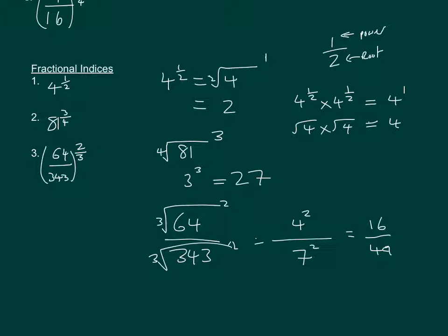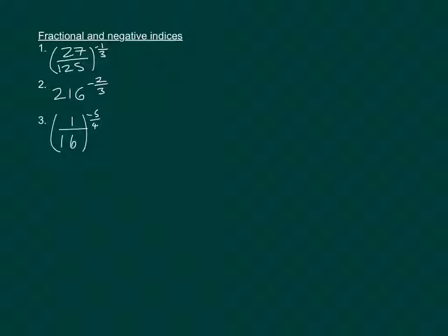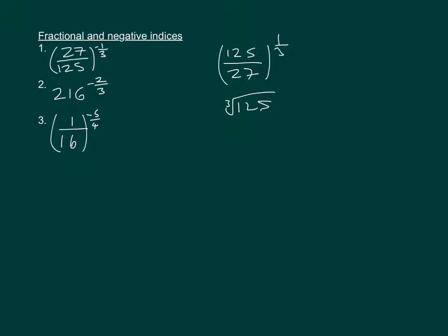Now let's look at questions where there's a combination of the two: fractional and negative indices. For number one, we have 27 over 125 to the power of minus a third. That minus is telling us to do the reciprocal, so we get 125 over 27 to the power of positive a third. Then we do the third root of both numbers: the third root of 125 is 5, and the third root of 27 is 3, giving us 5 over 3.